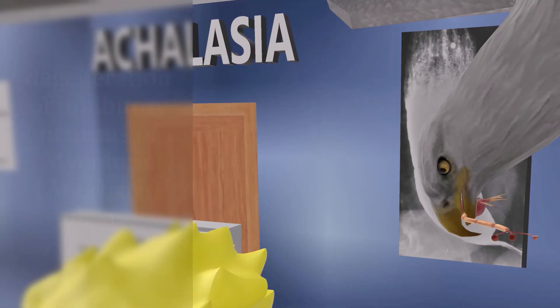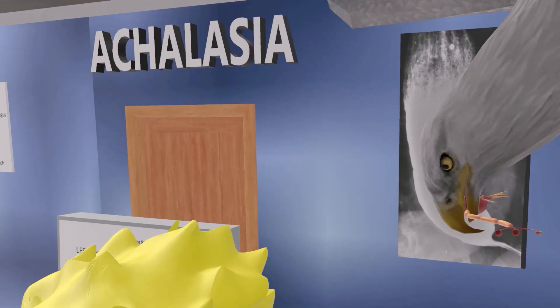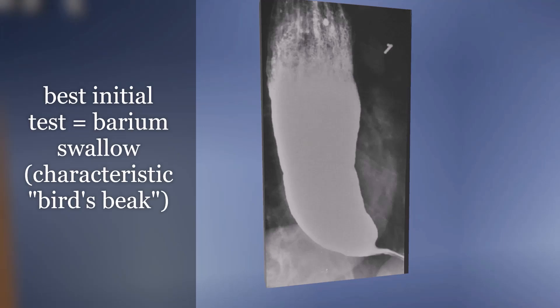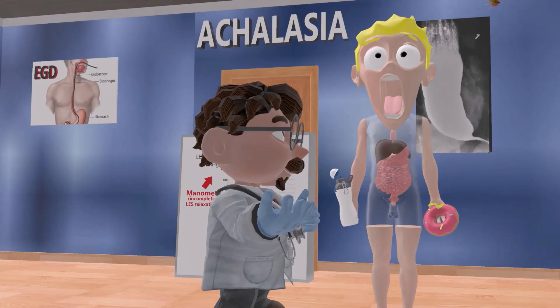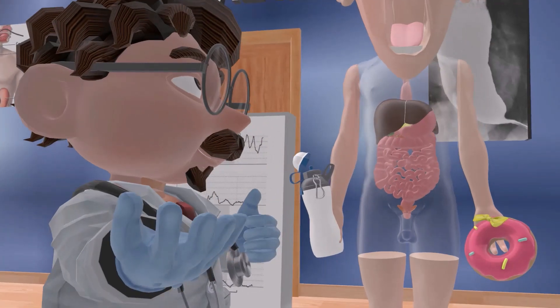The bird shown here outlines the barium swallow appearance. The best initial test for achalasia is the barium swallow, which shows a characteristic bird's beak tapering of the distal esophagus, representing esophageal dilation proximal to the narrowed segment.